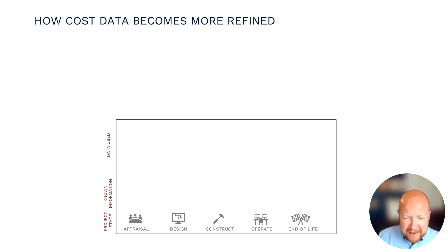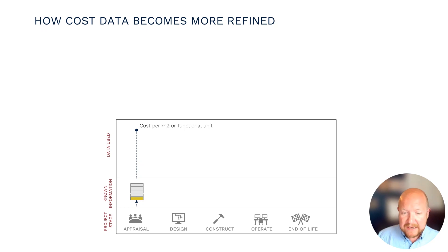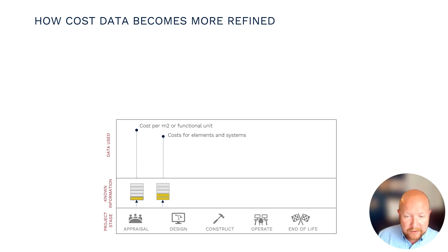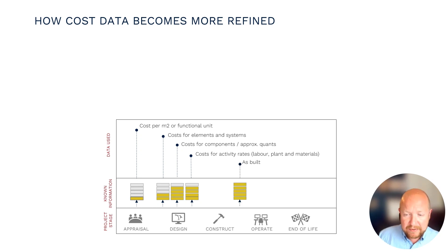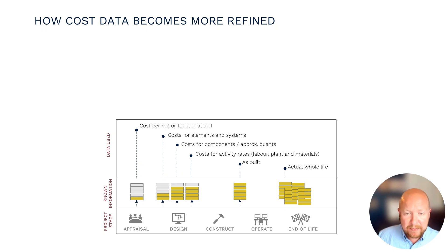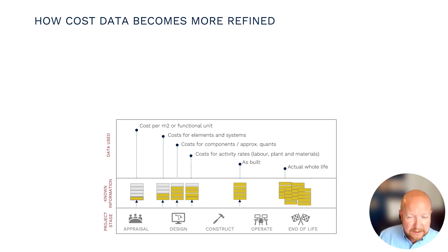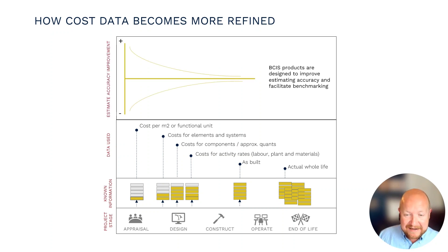Looking across the project stages from conception to design, building operation, maintenance, and ultimately end of life, the cost data we have clearly varies considerably. Those differences are largely due to the fact that at different points in time we know different things. At the appraisal stage we might know the building's size but very little about specification or operation. As we move through the stages, the information we have becomes more detailed and so does the cost data we need to input. It's only after the build is complete that we can have a proper understanding of what was actually used in the construction phase and any variations made to the plans.